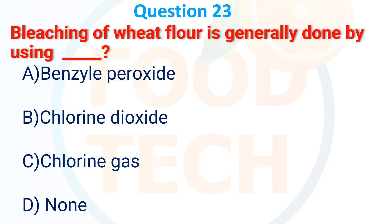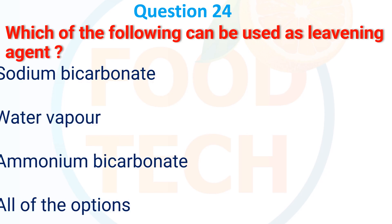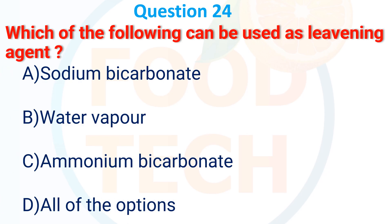Bleaching of wheat flour is generally done by: A. Benzoyl peroxide, B. Chlorine dioxide, C. Chlorine gas, D. None. The answer is A. Benzoyl peroxide.